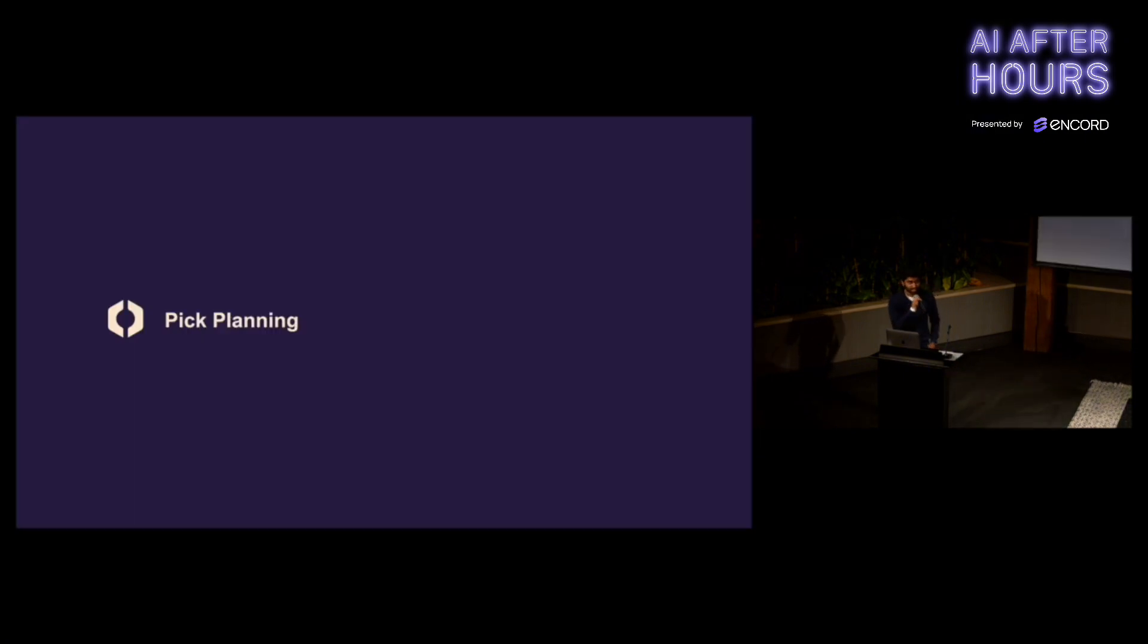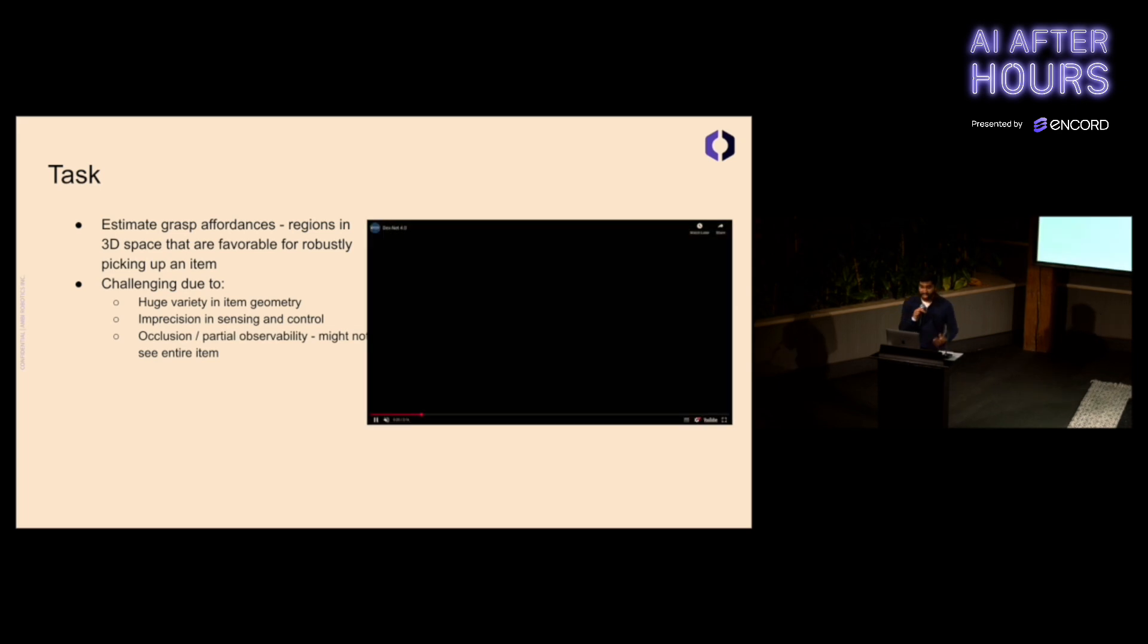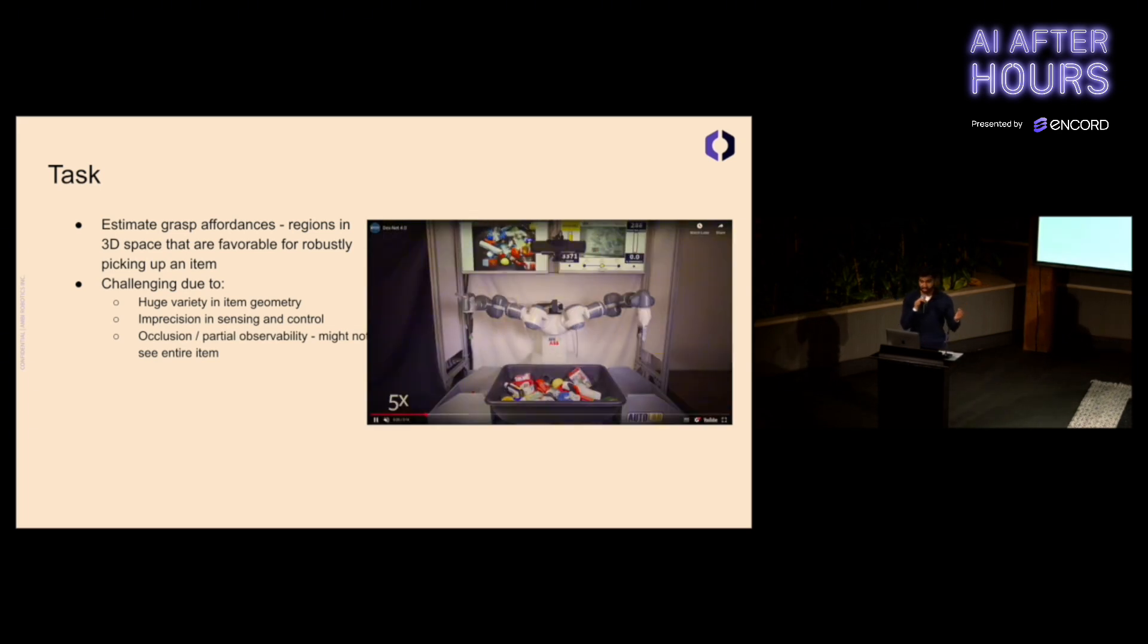The next task is pick-planning. Once you can see the world, how do you interact with it? The task here is to estimate grasp correspondence affordances—regions in 3D space that are favorable for robustly picking up an item. For example, if you have a mug, you'd want to pick it up by the handle.